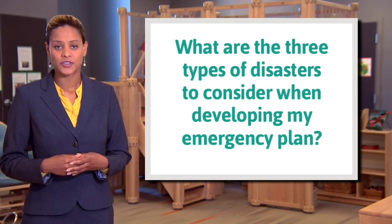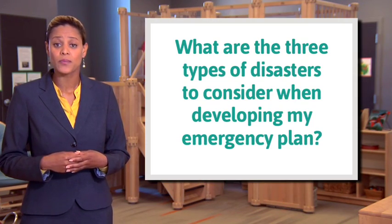What are the three types of disasters to consider when developing my emergency plan? The three types of disasters are fires, floods, and earthquakes. Fires may break out in your facility or in an adjacent building, or approach from a nearby forest or other fuel source. Flooding may occur in your building from a break in a water main or a leaky roof, or immediately outside your building from the flooding of a river or other body of water. Earthquakes may cause minor damage to your facility, or major and widespread damage to your neighborhood and city, and also fires and floods.